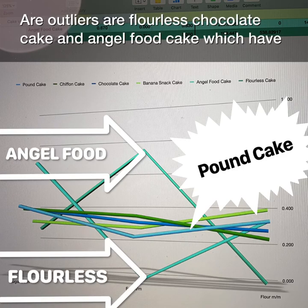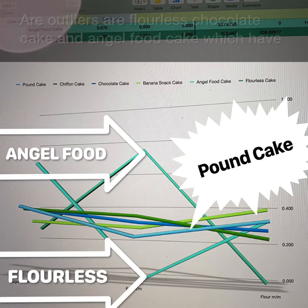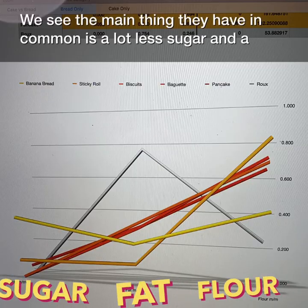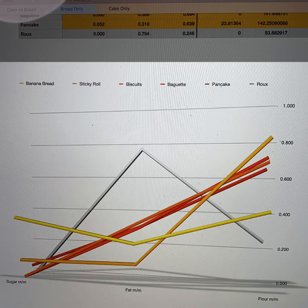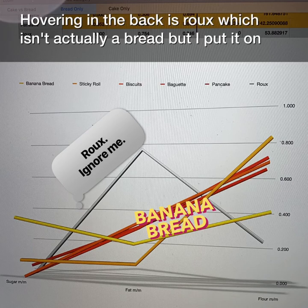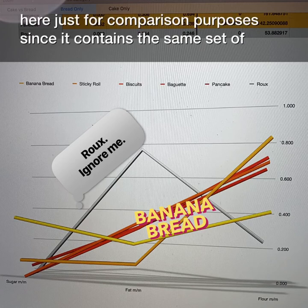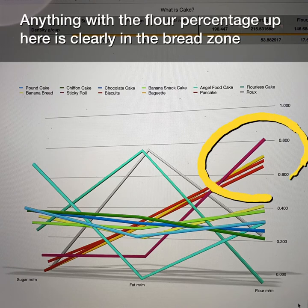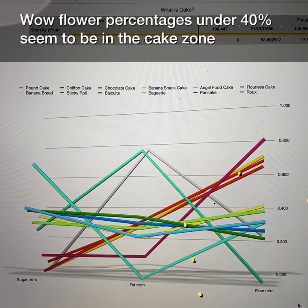Our outliers are flourless chocolate cake and angel food cake, which have no flour and no fat respectively. Turning now to breads, we see the main thing they have in common is a lot less sugar and a heck of a lot more flour. The least floury, with just a shade over 40% flour, is banana bread. Hovering in the back is roux, which isn't actually a bread, but I put it on here just for comparison purposes since it contains the same set of ingredients.